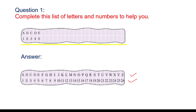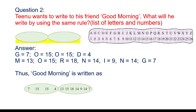Moving to the next page: Tinu wants to write 'good morning' to his friend — what will he write using the same rule? The first letter is G, so G gets the number 7. The next letter is O, and O is the 15th letter, so I have written 15. In this way, for G I write 7, for O I write 15, for the second O I write 15 again, and for D I write 4.